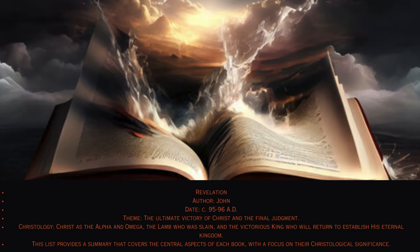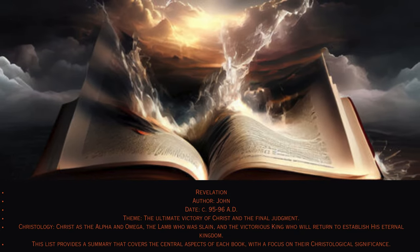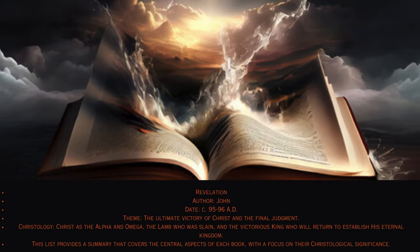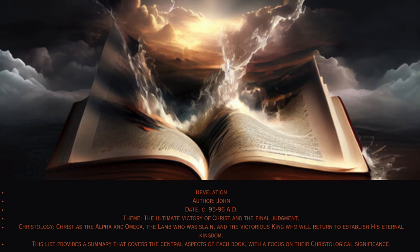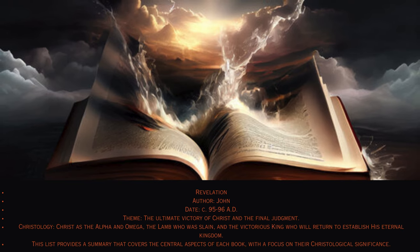66. Revelation. Author: John, circa 95–96 AD. Theme: The ultimate victory of Christ and the final judgment. Christology: Christ as the Alpha and Omega, the Lamb who was slain, and the victorious King who will return to establish his eternal kingdom. This list provides a summary covering the central aspects of each book with a focus on their Christological significance.